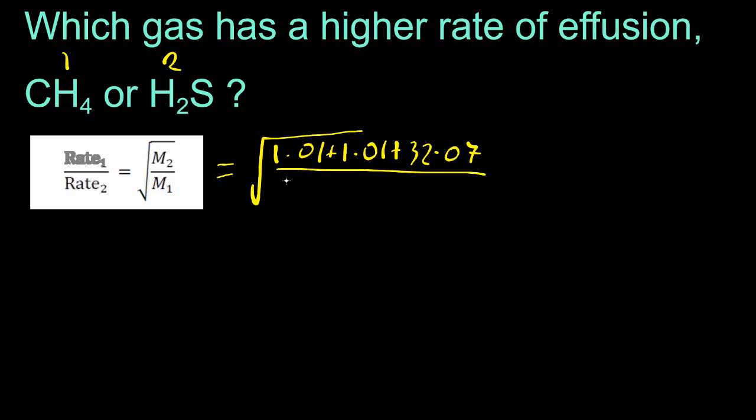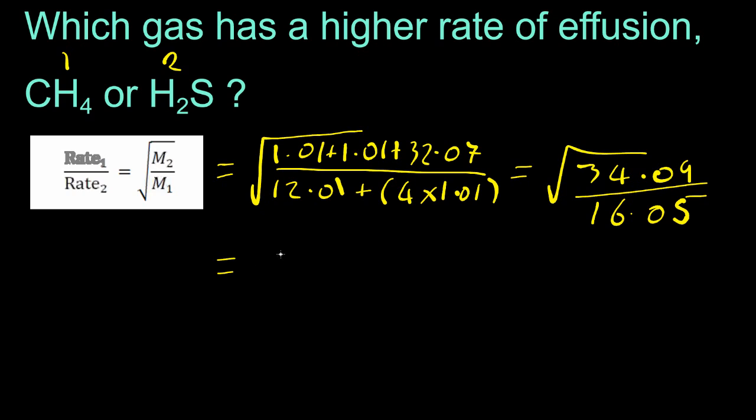Putting in the molar mass for hydrogen sulfide, and then the molar mass for methane. Trying to keep the sig figs that the IB provides in the data booklet. And that gives me the square root of 34.09 over 16.05, which gives me 1.46, three sig figs.